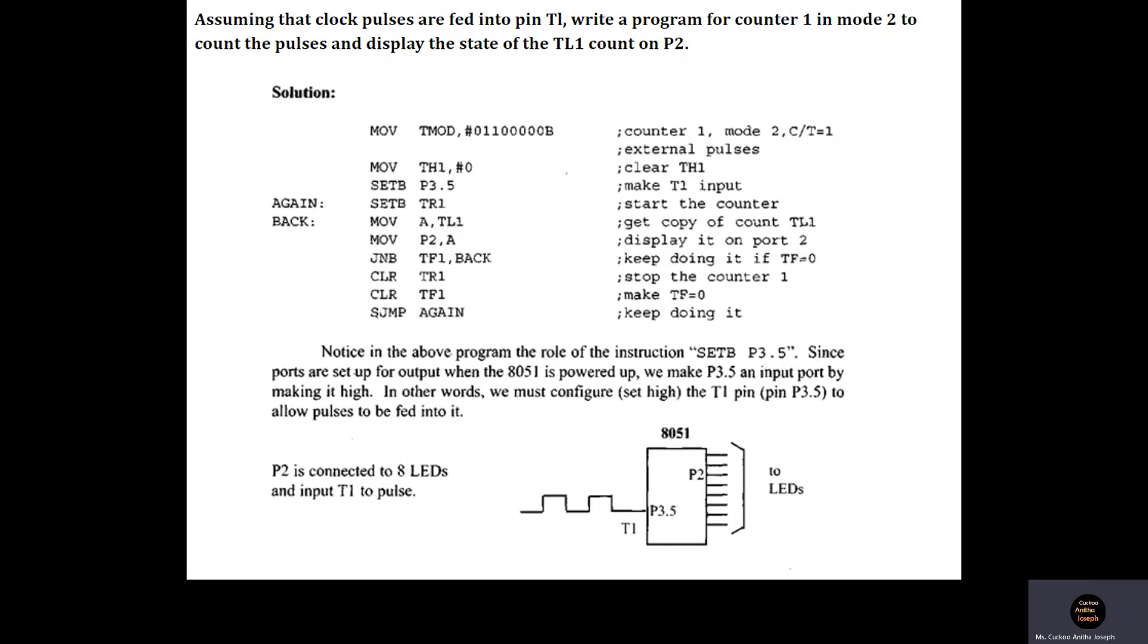So MOV TH1, #0 will clear TH1, and that will be the initial count that will be loaded into TL whenever the timer overflows. The next step is to configure T1 as an input port. For that it should be set high. SETB P3.5 will set the port pin 3.5 high so that it can act as an input pin.